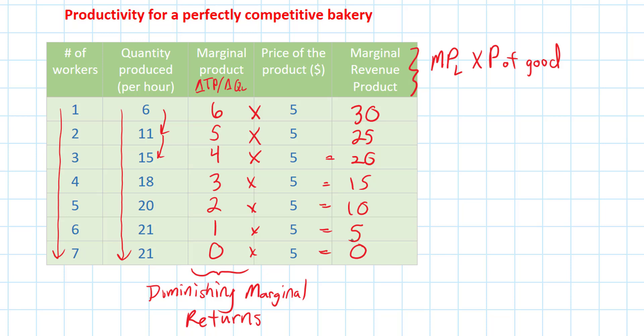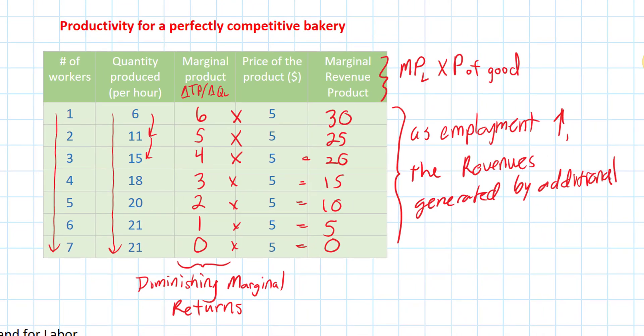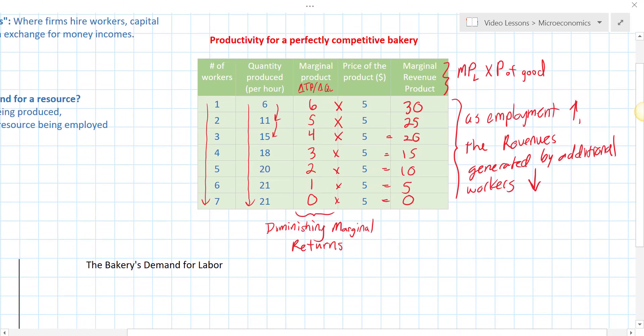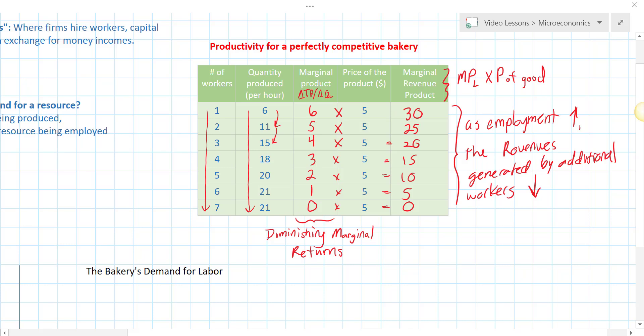As the firm employs more workers, the revenue generated by each additional worker decreases. The price of bread stays the same, but the productivity of additional workers decreases, so the amount of revenue each additional worker earns the firm falls. As employment increases, the revenues generated by additional workers decrease. Workers are less productive as we hire more of them, so firms are willing to pay less for each additional worker.